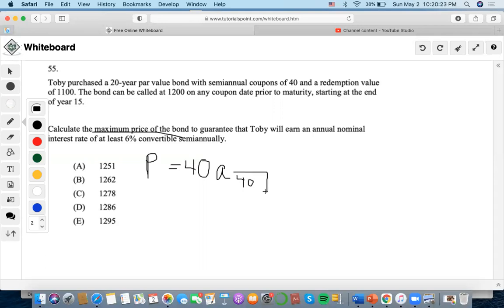6% semi-annually, 3%, plus redemption of $1,100 V to the 40.